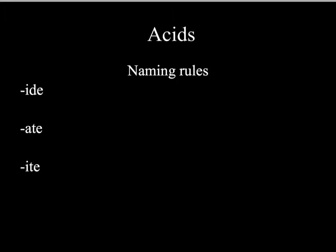So we have three general rules for naming acids, and they all deal with the suffix on the anion. Here we have three suffixes that we usually find. We have ide, ate, and ite. Now, ate and ite are generally on polyatomic ions. Ide is generally on monatomic ions.